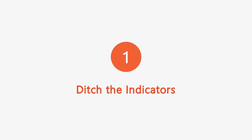Let's jump into the first topic: ditching the indicators. What that means is we're going to get rid of every indicator on your chart. This is really going to set the foundation for you to be able to trade price action. This may be a little basic for some of you, but later lessons will get into more advanced topics, and this section will make your chart easier to read.